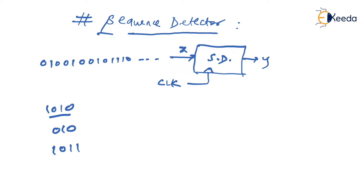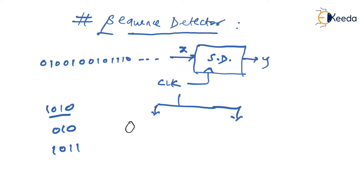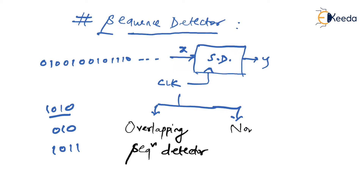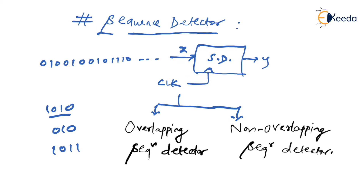In sequence detectors we are going to study two types: overlapping sequence detector and non-overlapping sequence detector. Make sure to understand the difference between these two categories by watching the next two video lectures. Thank you.